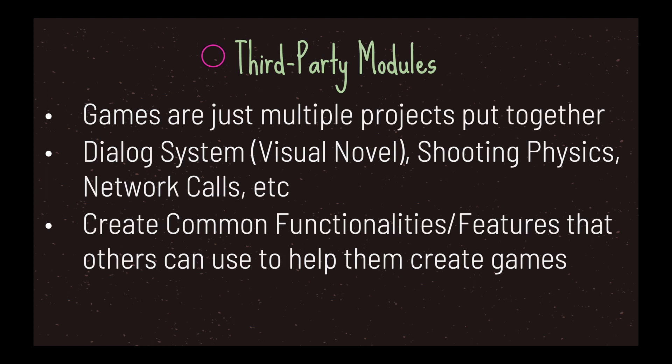The next thing is third party modules. Games are just multiple mini projects put together — take for example a dialogue system you find in visual novels, shooting physics, and network calls like HTTP requests. What third party modules do is that instead of a programmer implementing their own dialogue system, they could download a third party module from somewhere and just add that code to their game. Some people create common functionalities and features that others can use, and you can make money this way — people will purchase a dialogue system so they don't have to write that code themselves.